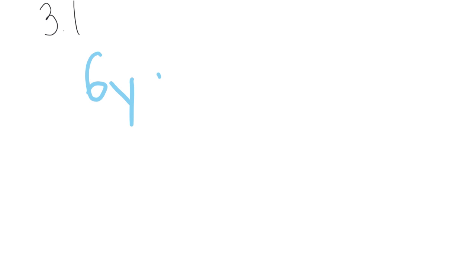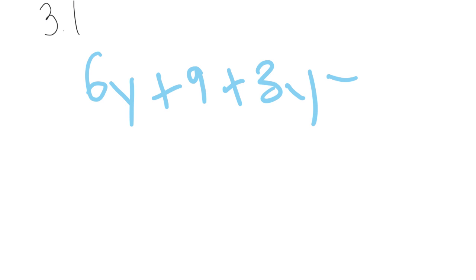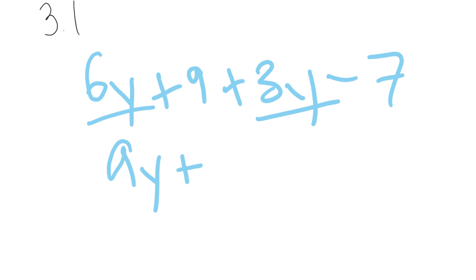Another one. Let's say we had 6y plus 9 plus 3y minus 7. So 6y and 3y are like terms — we can combine those to get positive 9y. Then we have positive 9 minus 7, which is 2. So the simplified expression is 9y plus 2. When you are asked to simplify, they're asking you to combine your like terms. That is how you will do that.